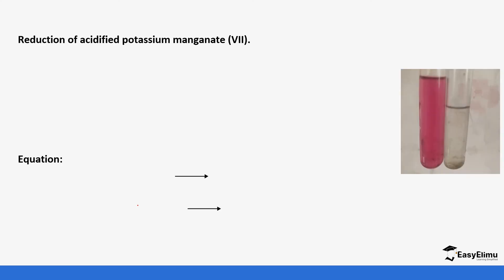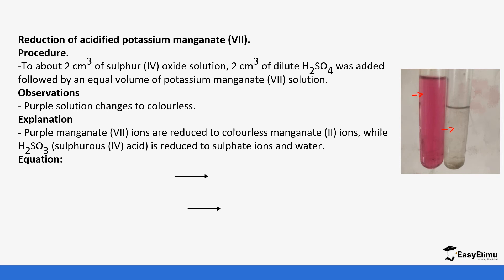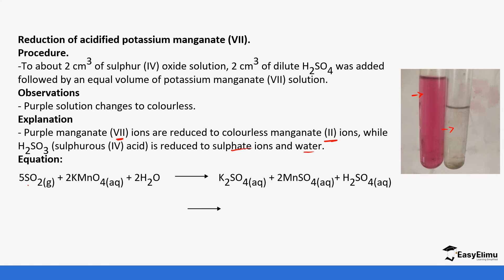An example of how sulfur dioxide acts as a reducing agent is the reaction with acidified potassium permanganate. As you can see from the image, it is purple in color. When you bubble sulfur dioxide into this acidified potassium permanganate, it turns to a colorless solution — from purple to colorless. This happens because the purple manganate(VII) ions are reduced to manganese(II) ions, while the sulfurous acid is oxidized to sulfate ions in water. The equation shows SO₂ dissolving in water to form sulfurous acid, whose sulfite ions lose electrons to form sulfate ions.